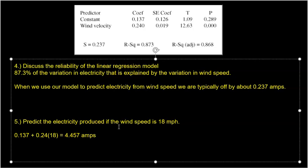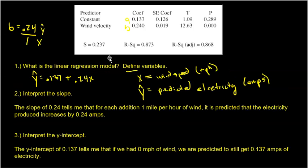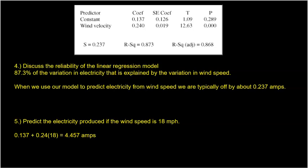A lot of students mess up the interpretations of R-squared and S, so please take time to analyze how these are done. It's really just like a script — you follow the script and fill in the explanatory and response variables for the specific problem, with units. This example is essentially a perfect test question: computer output table, writing the model, interpreting slope and Y-intercept, and then discussing reliability. This is exactly what you'll see on a test or quiz.